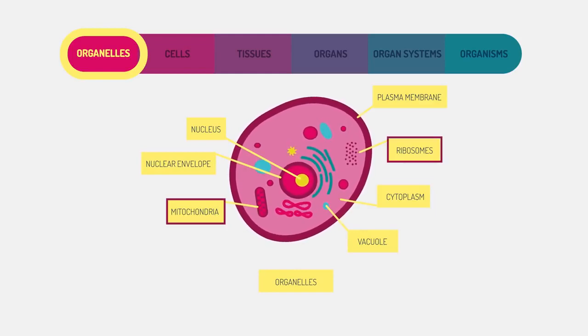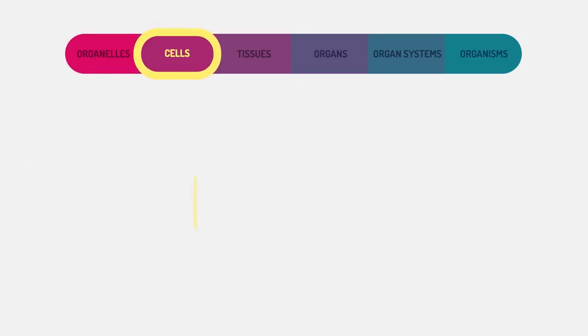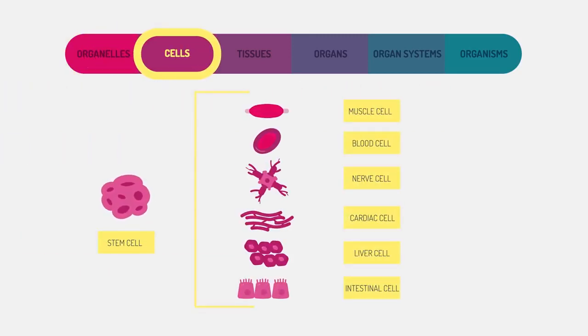Cells themselves are the basic structures that make up living organisms. In multicellular organisms, they are differentiated to carry out different roles. Here are a few specialized human cells.